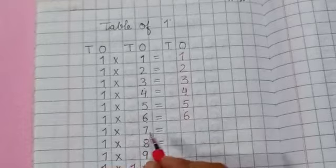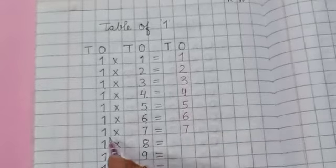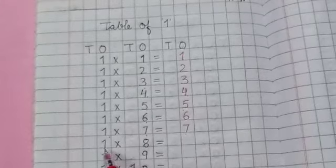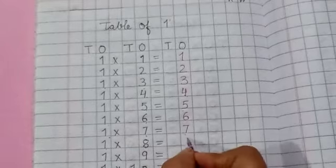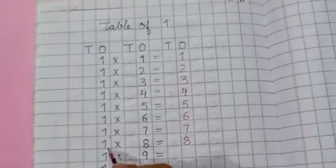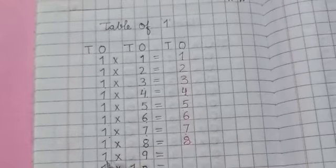One, sevens are seven. One, sevens are seven. One, eights are eight. One, eights are eight.